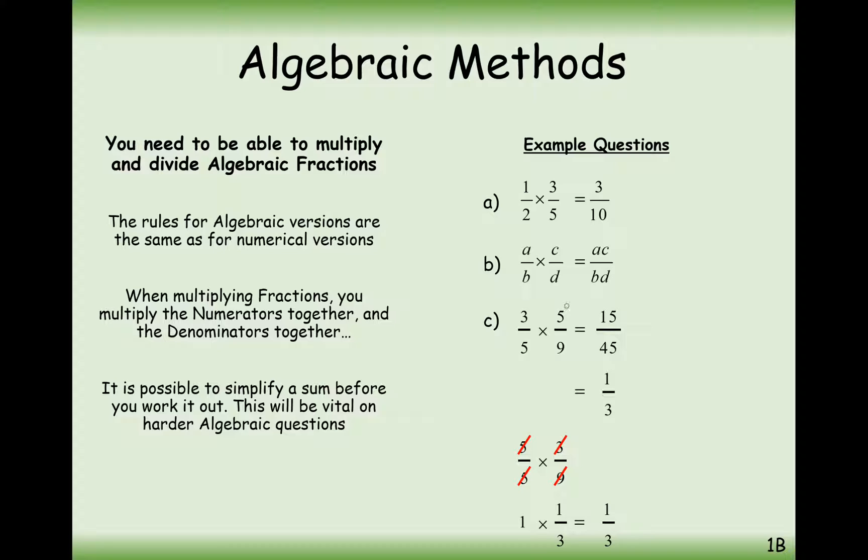So going back to this question up here, what we can do is we can cancel out diagonally, effectively, if we think about the 5 and the 3 switching positions, because 1 is effectively going to be a numerator multiple and 1 is going to be a denominator multiple. We can cancel out across here to leave a 3 on the bottom here. So your answer is just 1 third.